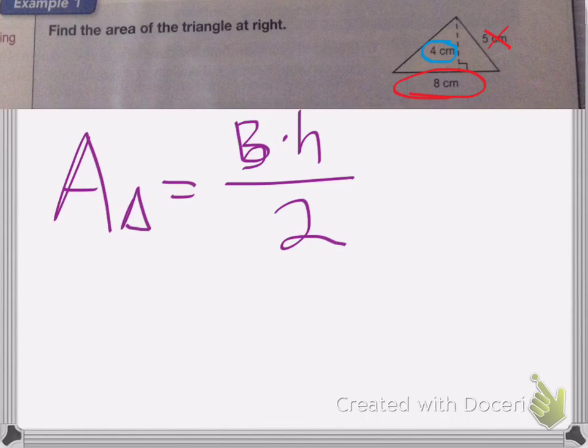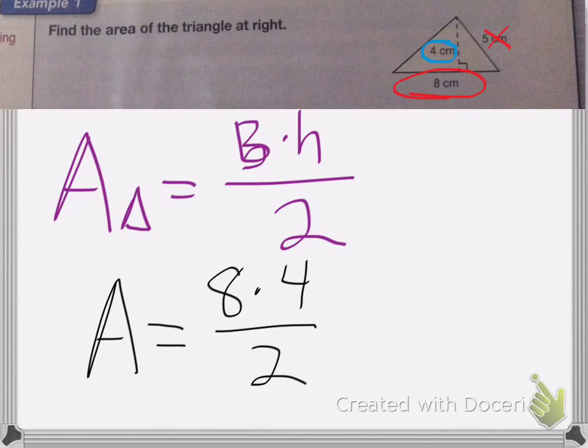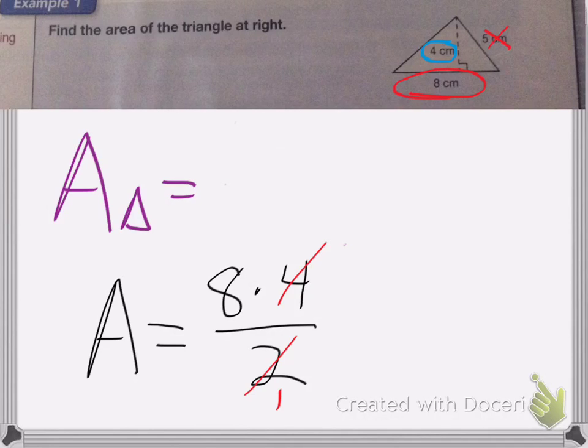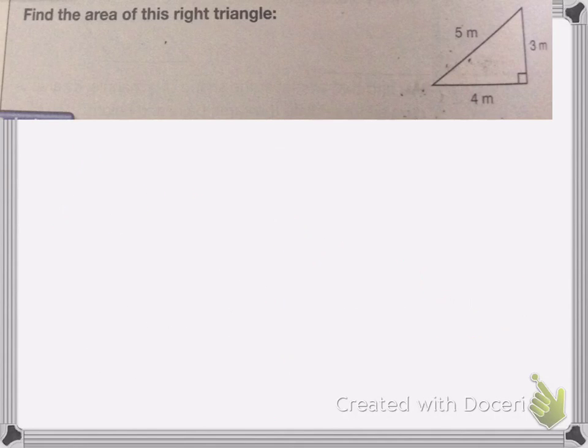So we have area of my triangle equals the base, which is 8, times the height, which is 4, divided by 2. I can go ahead and just reduce first, or cancel out first, so I can cancel the 4 and the 2. 2 becomes a 1, 4 becomes a 2, 8 times 2 is 16, so my area is 16 centimeters squared.